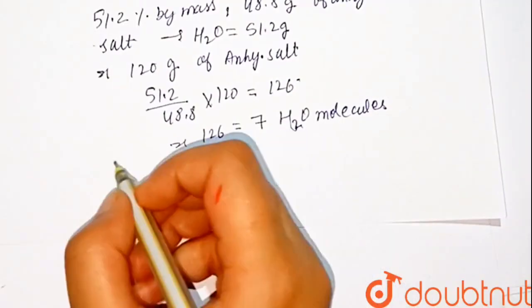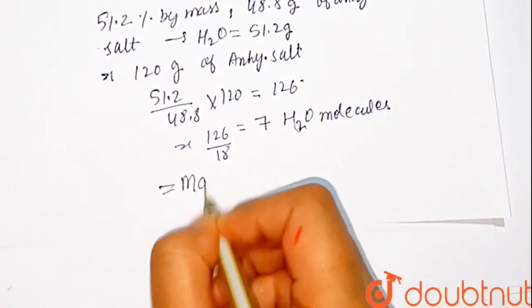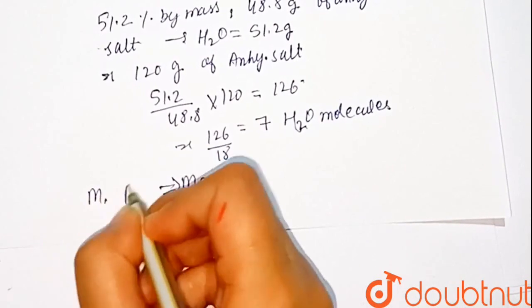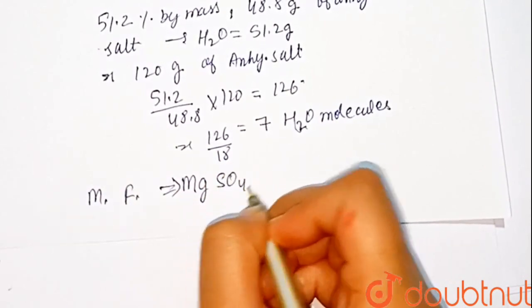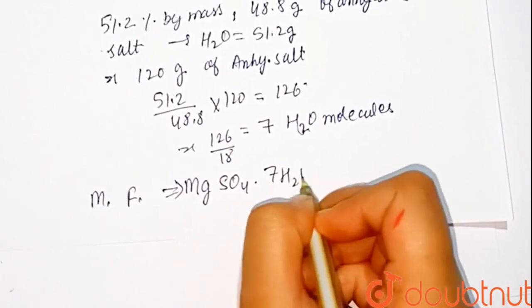Hence, molecular formula of crystalline salt is MgSO4·7H2O.